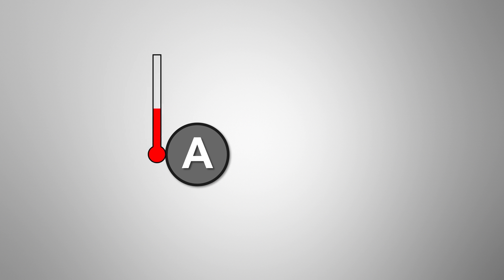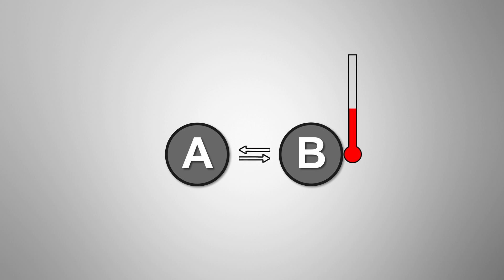If you then place the thermometer against B and its reading does not change, you now know that the thermometer and B are at the same temperature. This implies that A and B are at the same temperature.